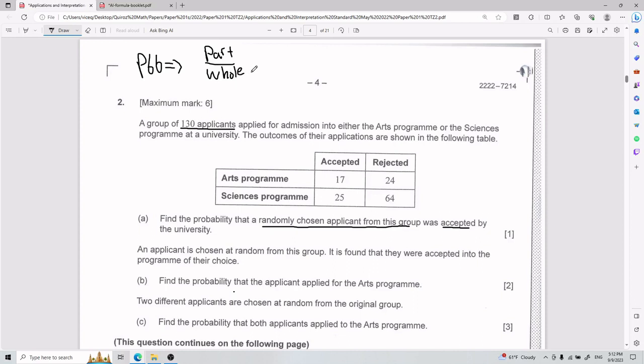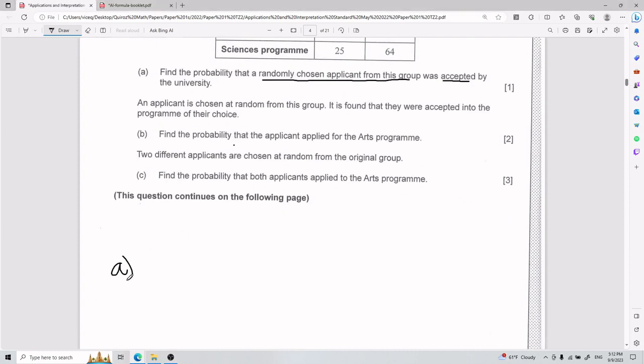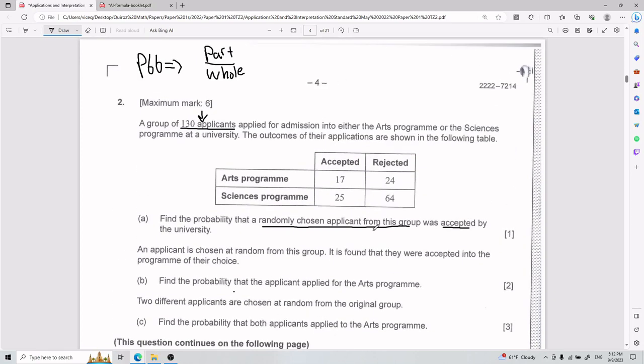Really think about what is the part of the whole you're trying to go for. And so the whole, my total is 130 applicants. So for part A, the probability has to have 130 on the bottom, because we are snatching someone from either of these four, from the whole group, from the 130 applicants that we have.